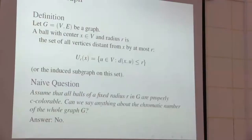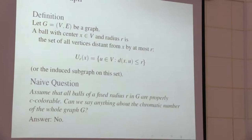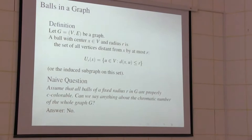Often this part is just a ball in the graph — a ball in the usual graph metric. We say that a ball with center at some vertex and radius r is just the set of all vertices which are at distance less than r from x, where the distance is the usual graph distance.